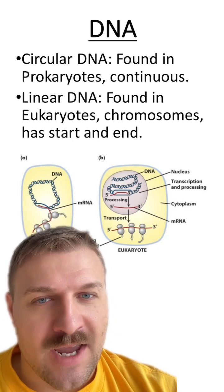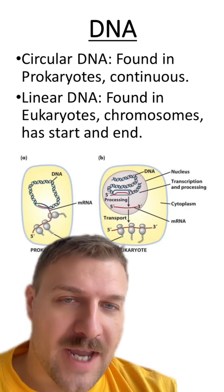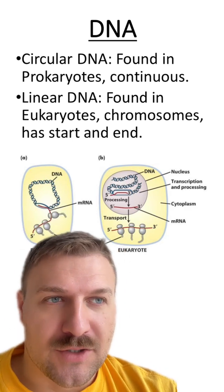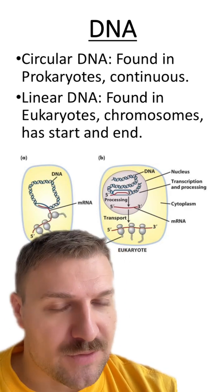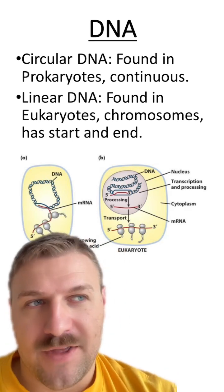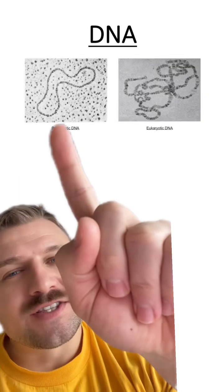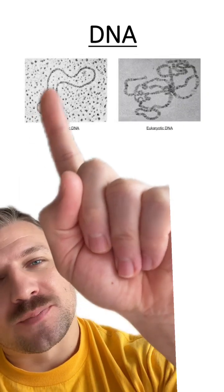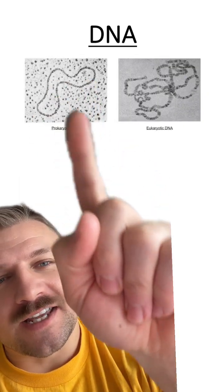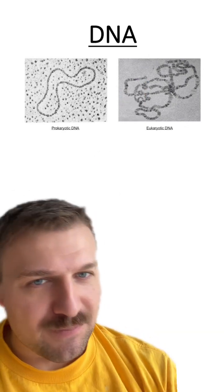Both of these DNA types are going to code for mRNA that's going to code to make a protein. But how they are stored is just a little bit different. You can see the circular prokaryotic DNA versus the eukaryotic DNA that has a start and an end point.